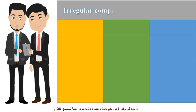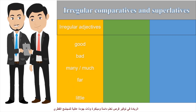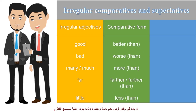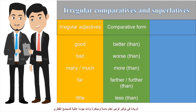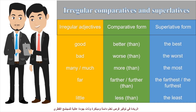In English, we have irregular comparatives and superlatives. There are five irregular adjectives: good, bad, many/much, far, and little. Their comparative forms are: better than, worse than, more than, farther/further than, and less than. Their superlative forms are: the best, the worst, the most, the farthest/furthest, and the least.